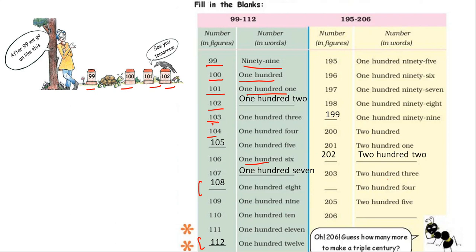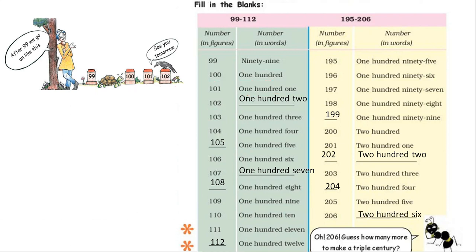Now, 203. In words, what will we write here? 204. Then what will we write here? 206 in words. 206. 207.